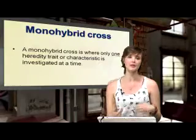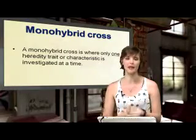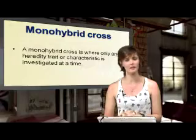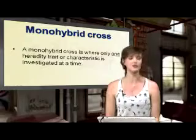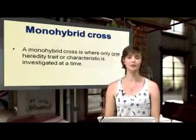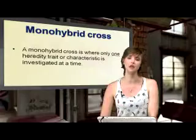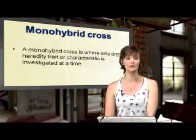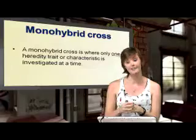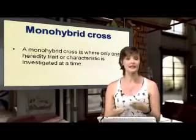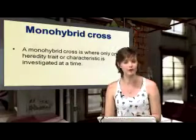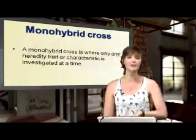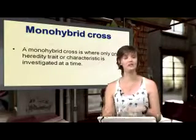For example, in humans: what are the chances of a baby having blue eyes or brown eyes, of being tall or short? In plants: what are the chances of having purple or white flowers, round or wrinkled seeds? In animals like rabbits: dark fur or white fur, red eyes or black eyes? These are the kinds of things we look at with monohybrid crosses.